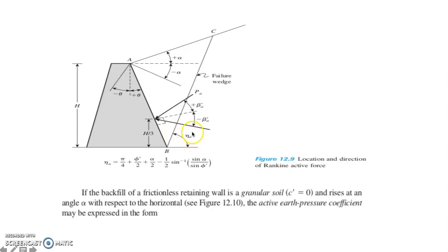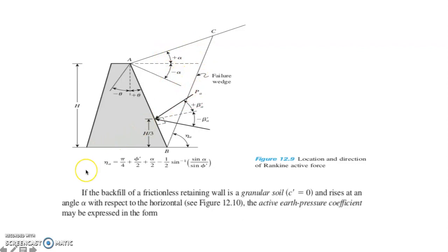The angle eta, which is the angle of the failure wedge with the horizontal, can be computed using its equation by substituting the appropriate parameter values. For a frictionless retaining wall where the backfill is a granular soil (C' = 0), the backfill rises at an angle alpha with respect to the horizontal.